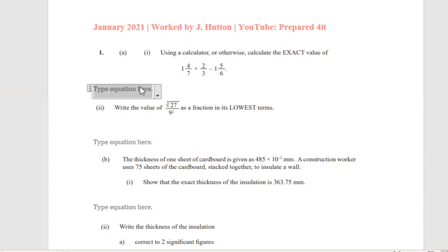Question 1a says: without using a calculator, calculate the exact value of 1 and 4 over 7 plus 2 over 3 minus 1 and 5 over 6. First, we need to find the LCM, but before doing that we'll convert the mixed fractions to improper fractions.